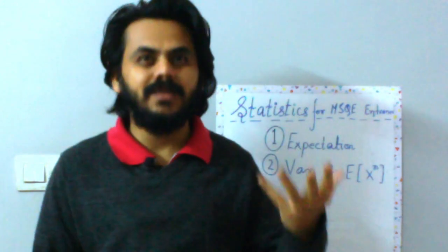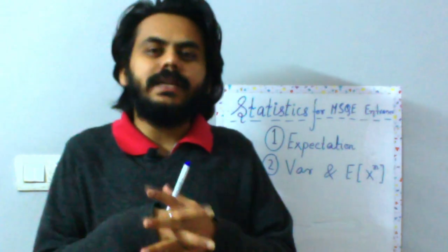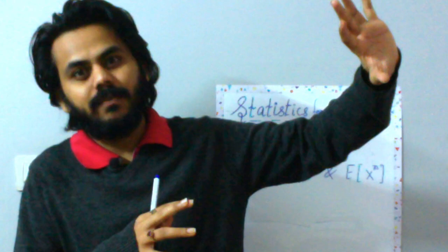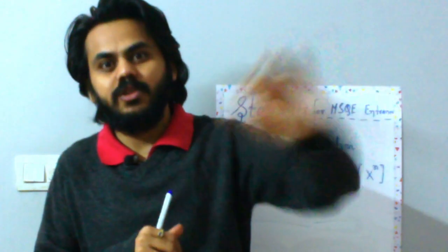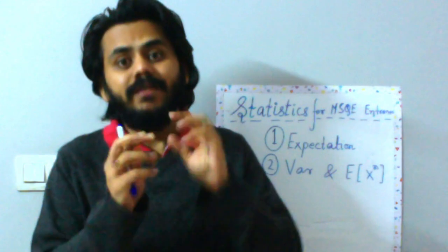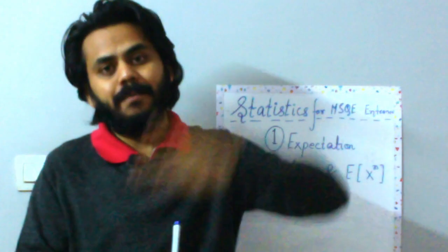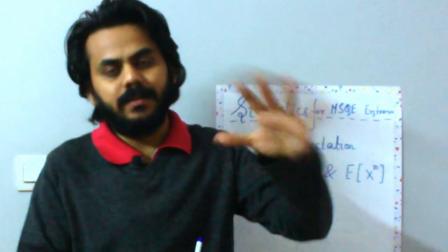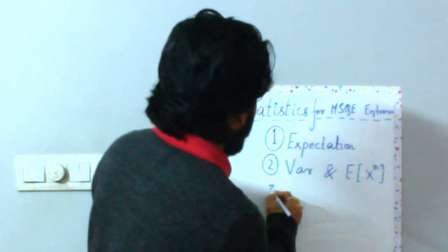Once you cross these two stages, calculating probabilities — independence assumptions, mutually exclusive and exhaustive assumptions — those are taken care of by the mathematics part of your ISI/MSQE preparation. There is a segue between maths and statistics, which is probability. I will cover probability preparation for MSQE entrance in the math preparation video or in a separate video. Here I am assuming you already know how to calculate different kinds of probability.